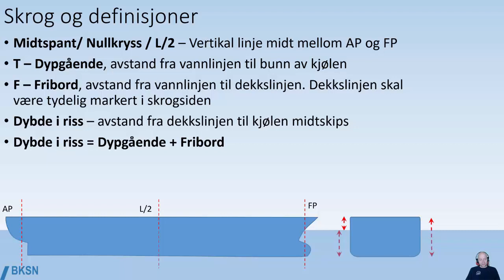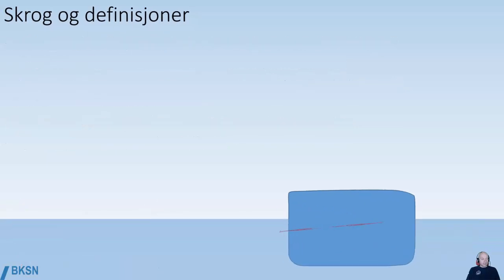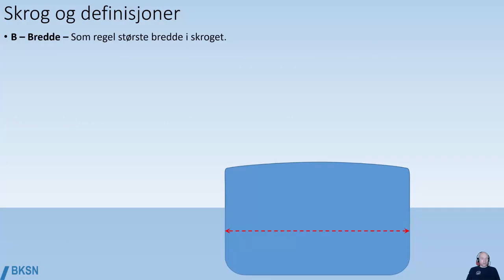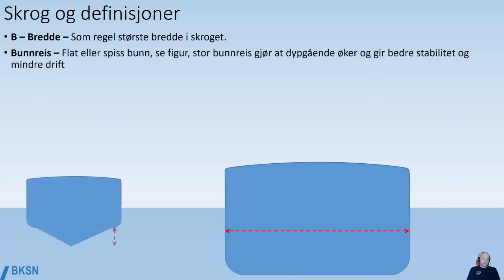So the sum of the ship's draft and the ship's freeboard will always equal the molded draft. Next, we have B, beam width — normally the hull's greatest width, measured in meters. Bundres is a term that measures whether the ship has a flat or a V-shaped bottom. If it has a lot of bundres, it means it has a higher draft, better stability, and less drift when you have wind from the side. Most bigger vessels have a flat bottom.